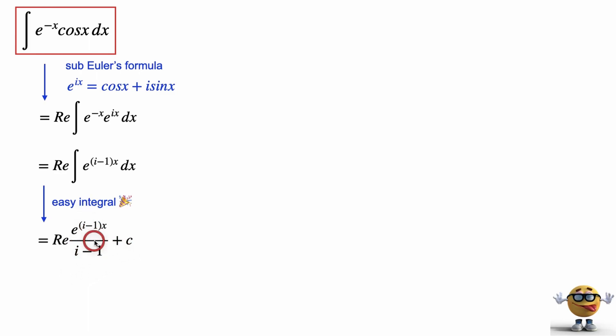Now we just need to extract the real portion out of this. What I'm going to do first is substitute back Euler's formula to get our cosines and sines. To get the real part, we need to have it in the form a plus bi, where a is the real part and b is the imaginary part.